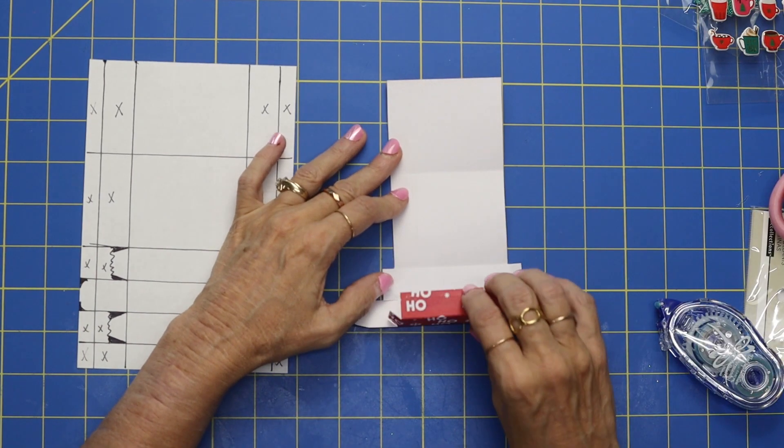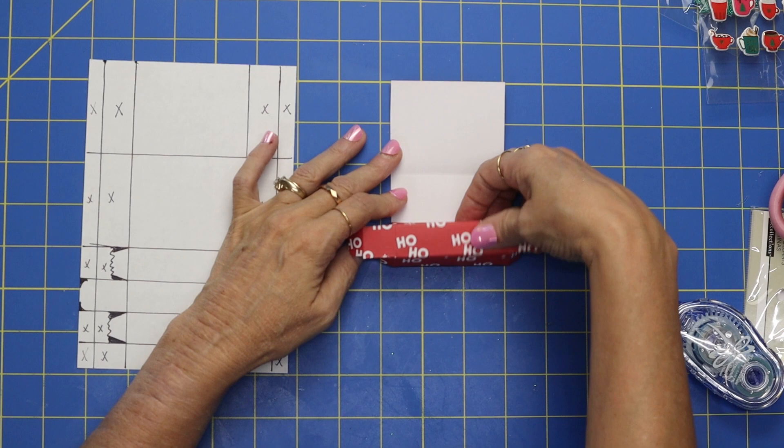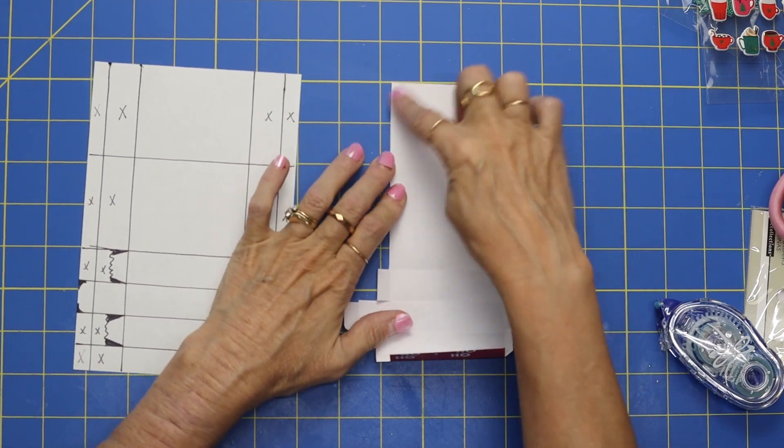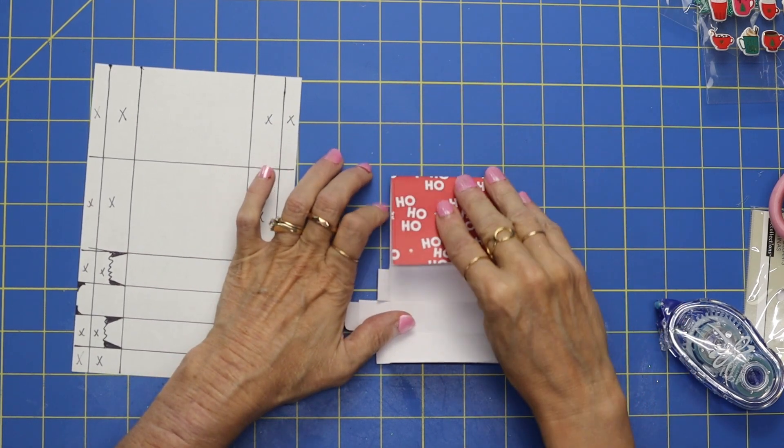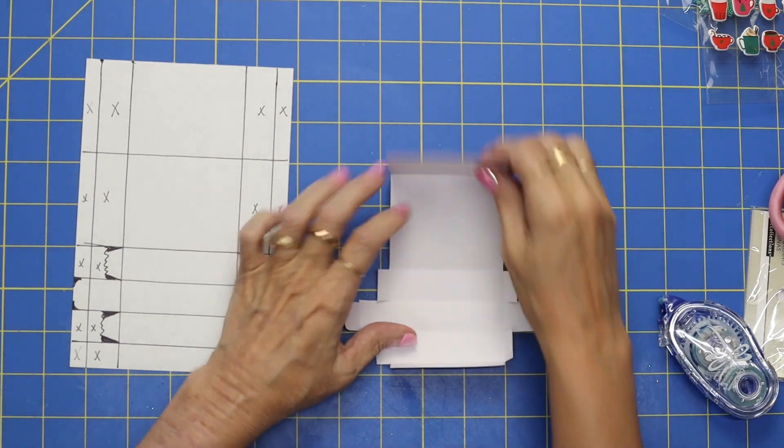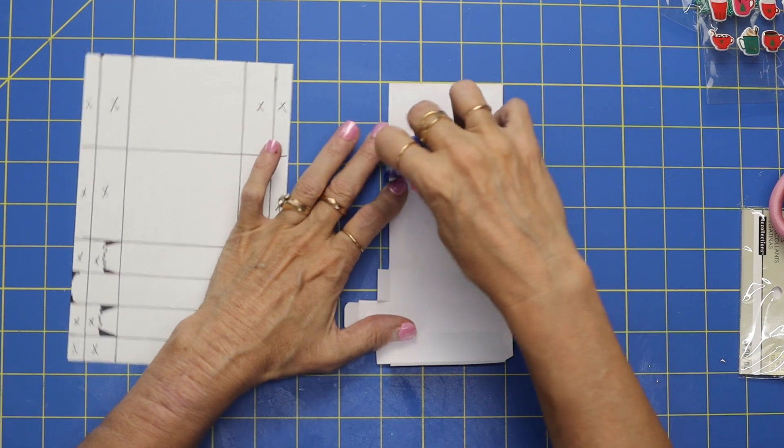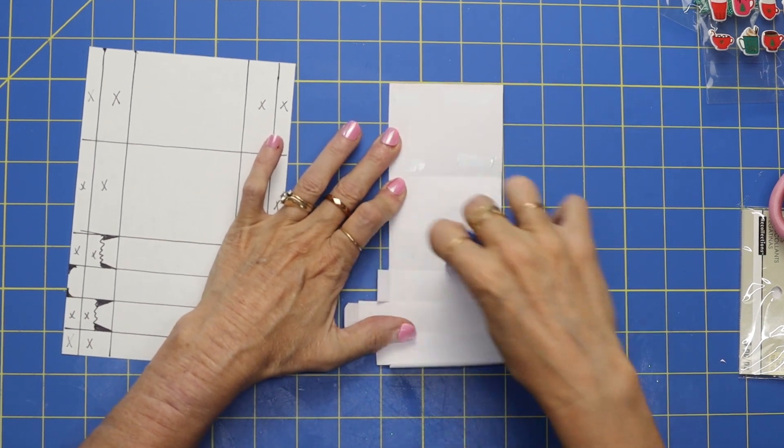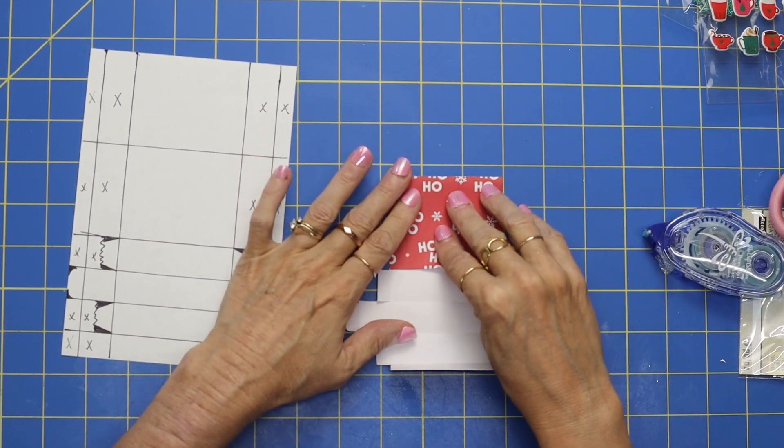So what we're going to do is we're going to end up folding our box over. But first, let's add some adhesive on to this so we have a nice finished cover. I'm going to add a little bit of tape here and just fold that over.